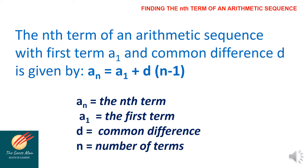The n-th term of an arithmetic sequence with first term a sub 1 and common difference d is given by: a sub n equals a sub 1 plus d times (n minus 1). Here, a sub n is the n-th term, a sub 1 is the first term, d is the common difference, and n is the number of terms.